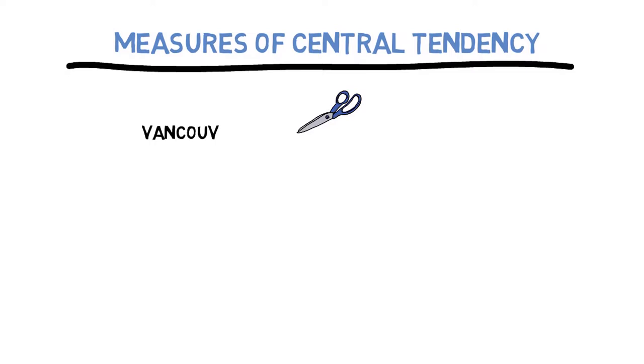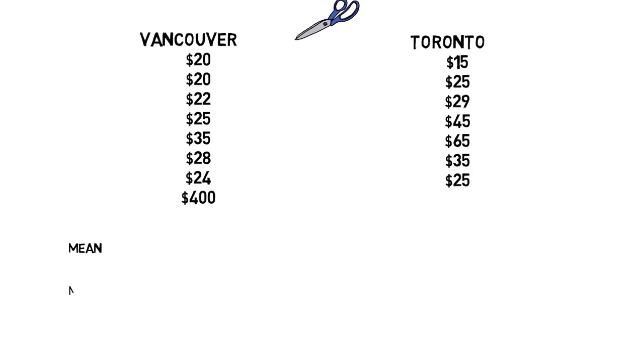Suppose we want to compare the price of haircuts for women between Vancouver and Toronto, and we have a list of values here. The average for Vancouver would be $72, while the average for Toronto would be $36. Based on this, we might conclude that it costs twice as more for a women's haircut in Vancouver versus Toronto.